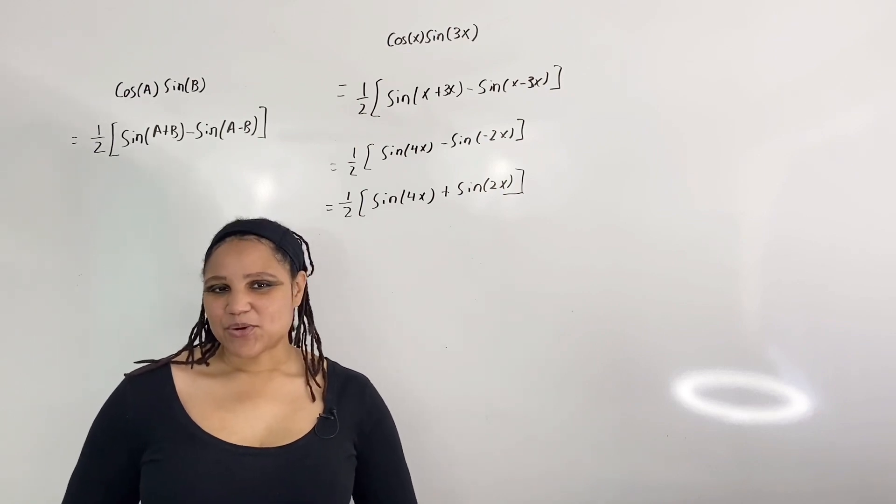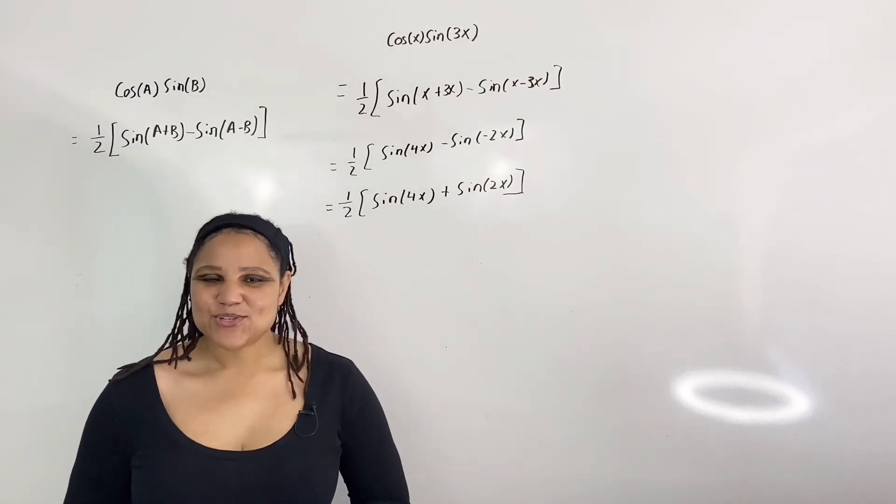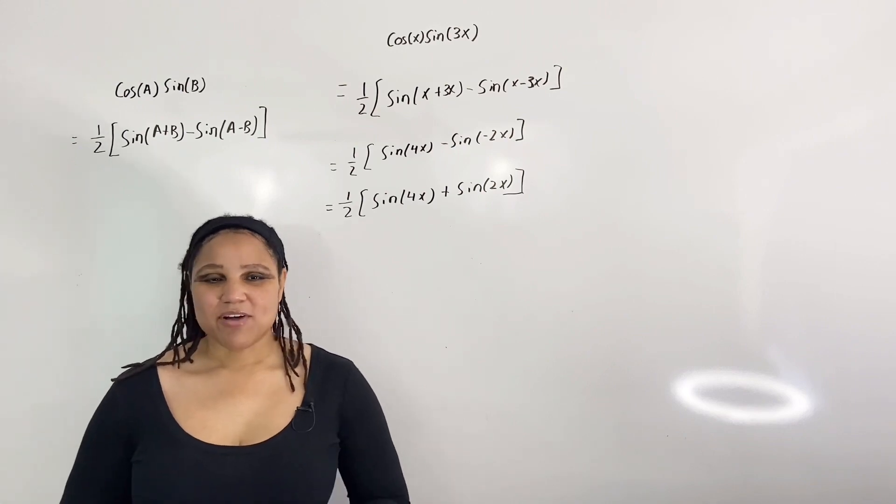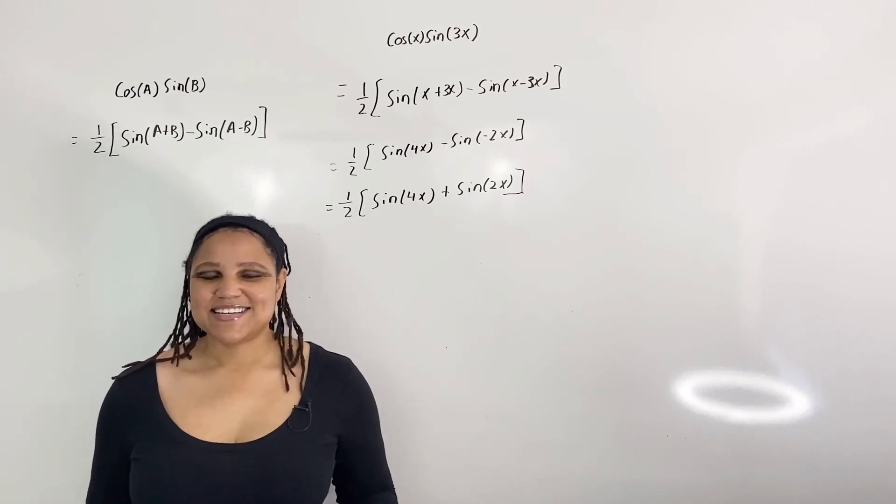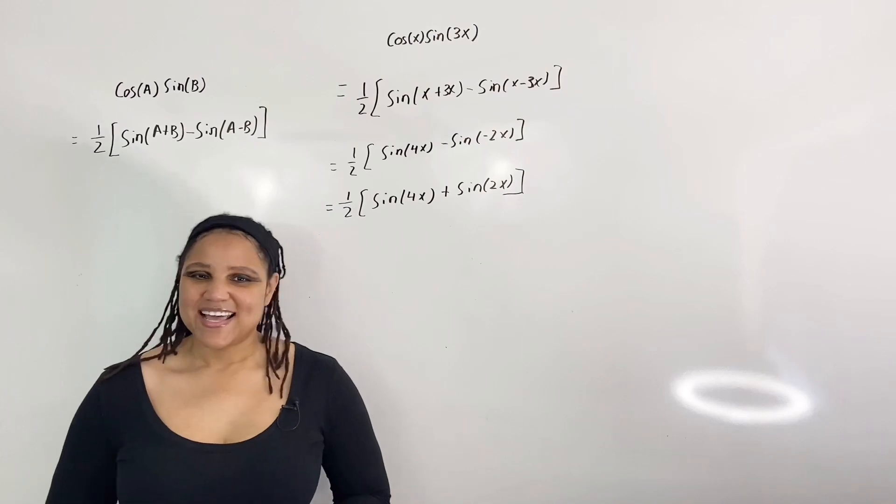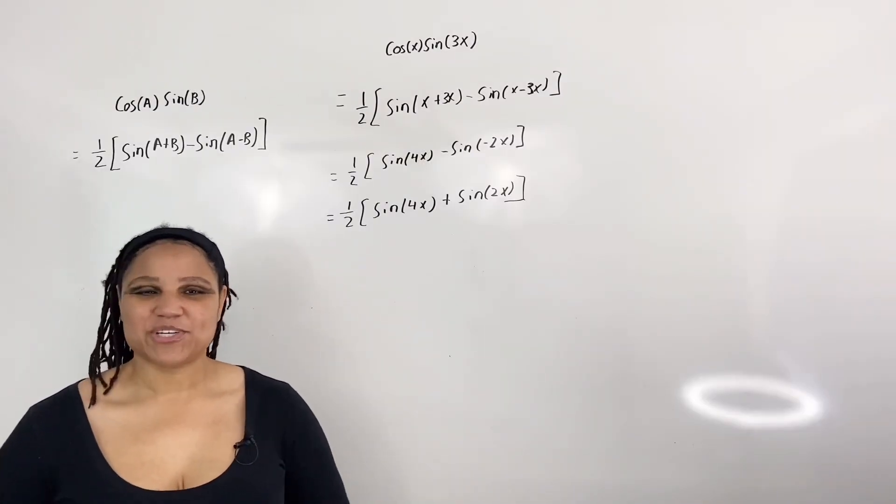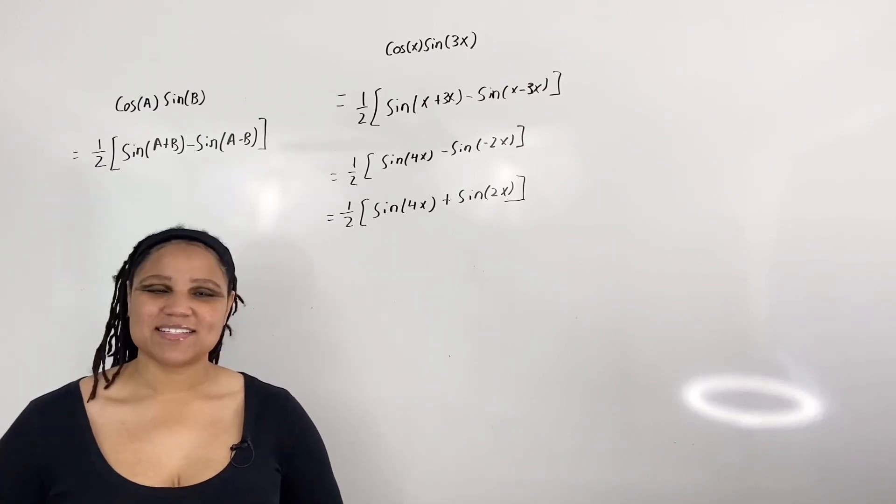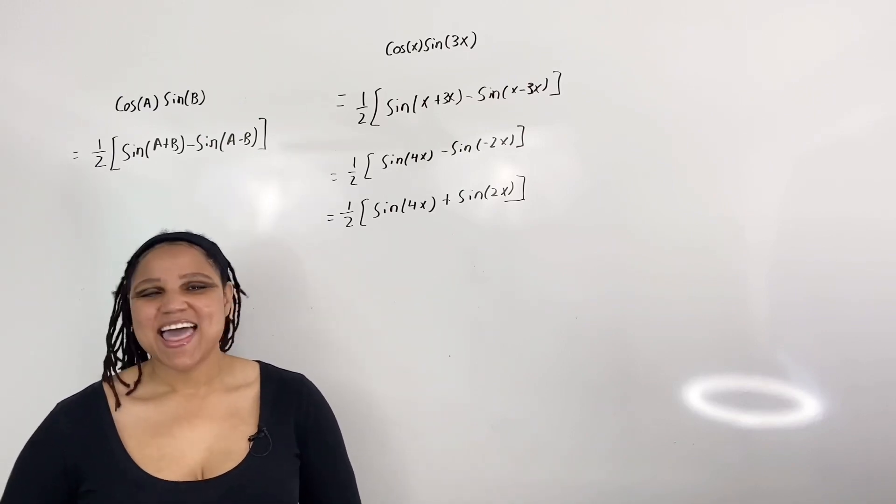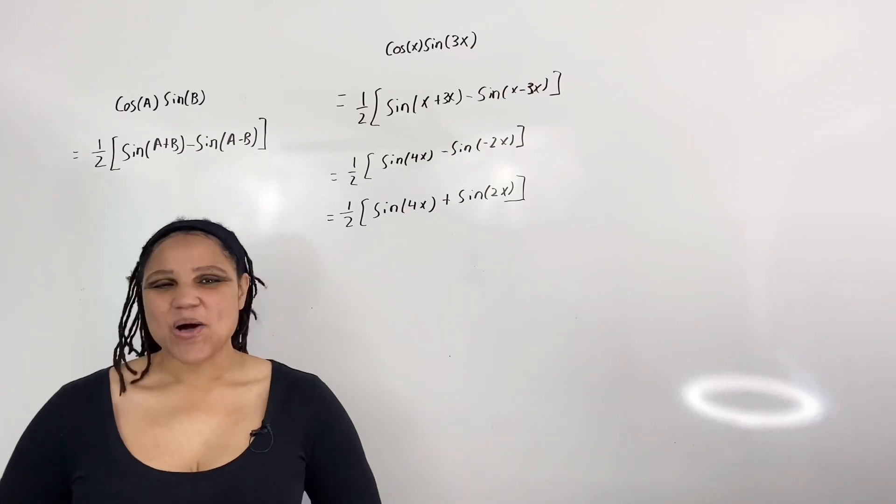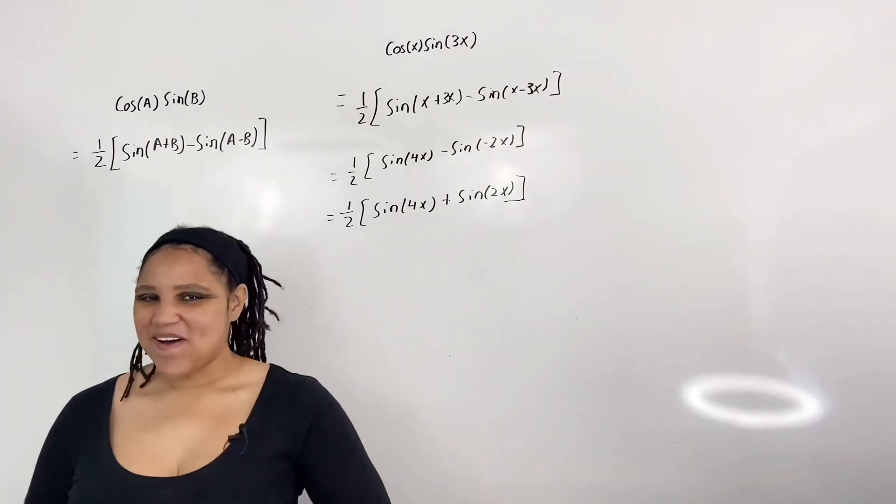However, in a trigonometry course, all you need to know is how to rewrite a product of cosine and sine as a sum of cosine and sine. And that is all for this video on using the product-to-sum identities. Thank you for watching, and always remember that you are awesome.